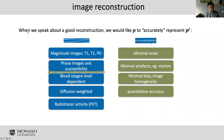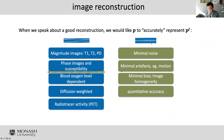When we speak about a good reconstruction, we would like the reconstructed image P to accurately represent PF. In terms of reconstruction, P can be magnitude images — for example T1-weighted, T2-weighted, proton density-weighted — or phase images, susceptibility-weighted, BOLD signal, diffusion-weighted, or in terms of PET, tracer activity distribution. Accuracy means minimal noise and minimal artifacts, for example from motion and image inhomogeneity. We want a good uniform image and quantitative accuracy.